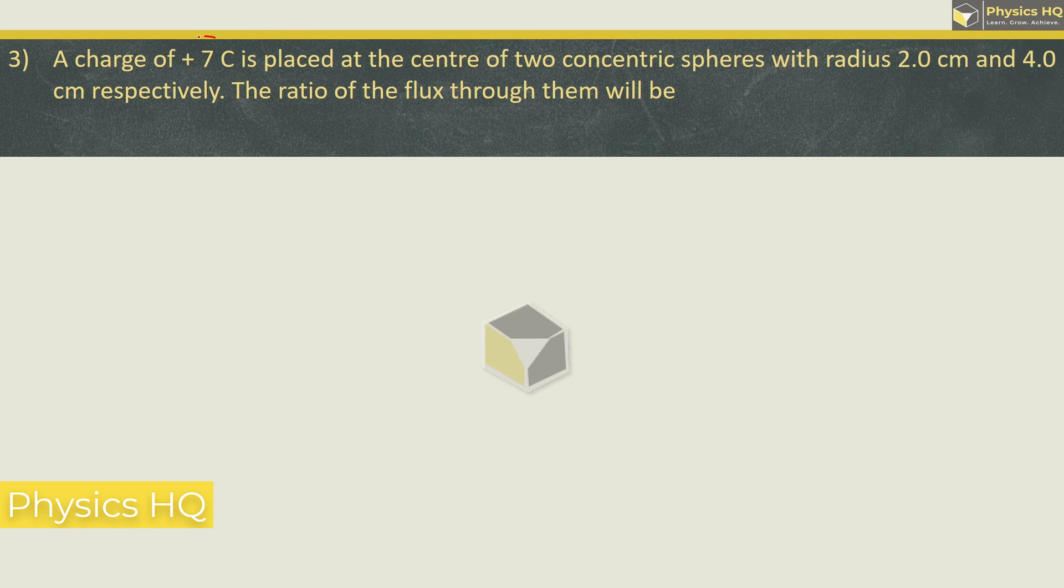A charge of plus 7 coulomb is placed at the center of two concentric spheres with radius 2 cm and 4 cm respectively. The ratio of the flux through them will be how much? 1 is to 4, 1 is to 2, 1 is to 1, or 1 is to 16.